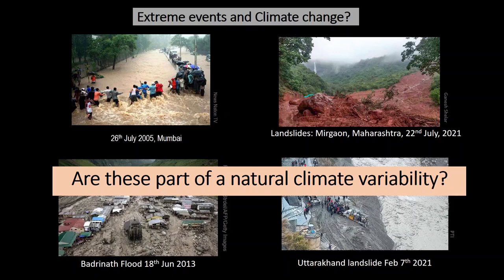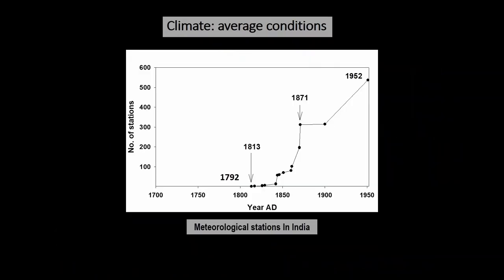To answer this question, we should look at available weather data. This graph shows the number of meteorological stations in India. The first station was established in 1792, and since 1813 we have a continuous weather record. By 1871 there were about 300 stations, and after 1952 more than 500, giving good spatial coverage. But we have very good instrumental weather records only from 1971 — that is, the last 150 years. Before 1971, we don't have any record.